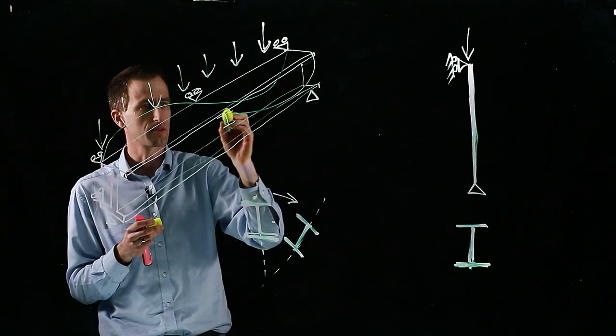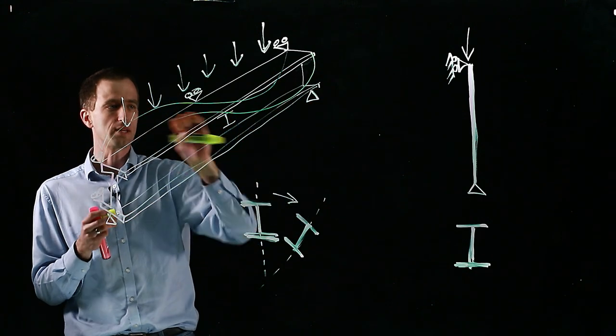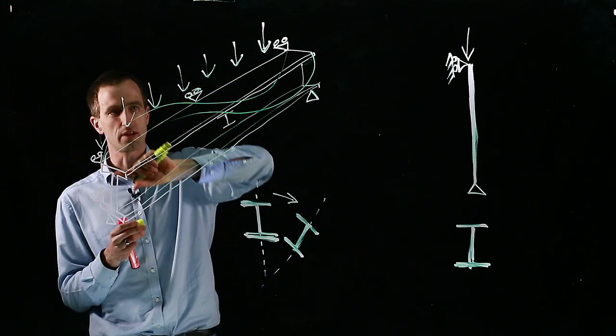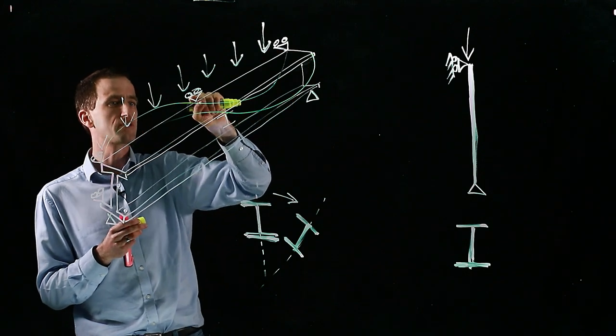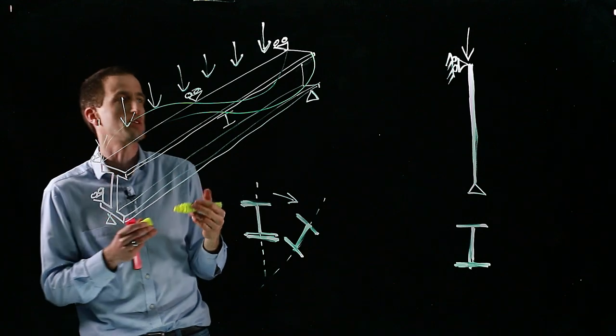That the top flange, which we can consider as a column, would actually buckle sideways. And it could go either way, but you would see this movement. So what I've drawn is the top flange there, which has now failed. And it can't move sideways where there's a lateral support, so there's a beam or column or something preventing sideways movement.